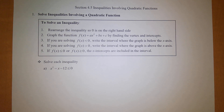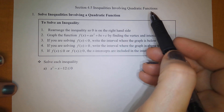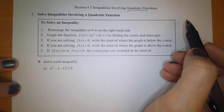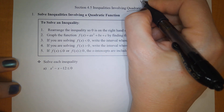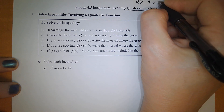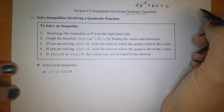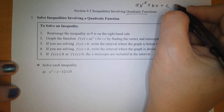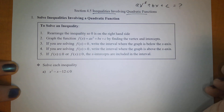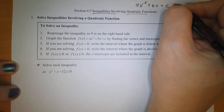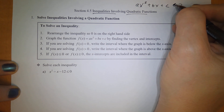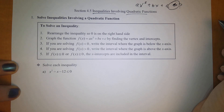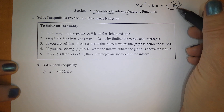In section 4.5, we're going to be discussing inequalities that involve quadratic functions. There are two key important words in this topic. Quadratics, which we previously discussed in section 4.3 — quadratic functions are anything that looks like a squared term, possibly a middle term, and possibly a constant. In the past we've always set that equal to some number, but now we're going to change it so they are inequalities — less than, greater than, or anything that doesn't involve an equal sign. So how does this sign affect and change the graph of a quadratic?